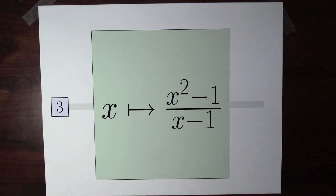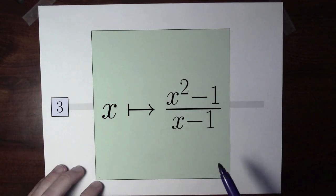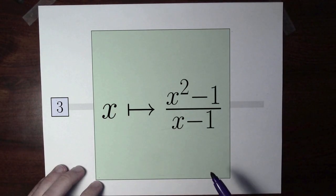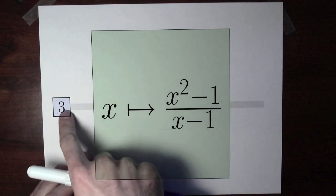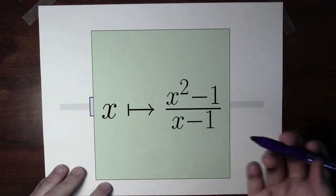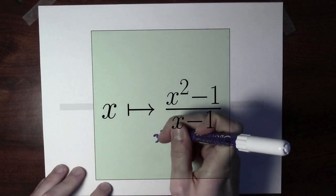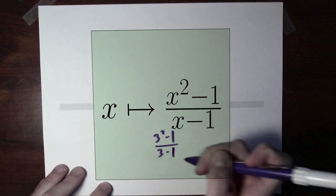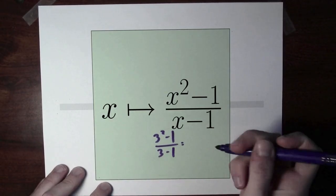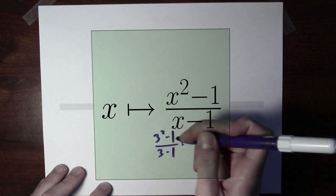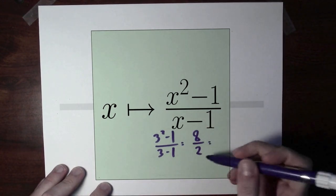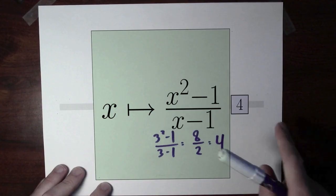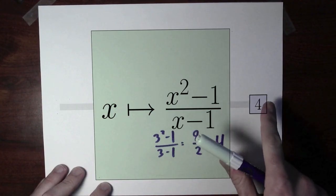Let's take a look at this function. This is the function that takes an input x and spits out x squared minus 1 divided by x minus 1. Let's try plugging the number 3 into this function. If I just compute 3 squared minus 1 over 3 minus 1: 3 squared is 9, minus 1 is 8, and 3 minus 1 is 2. And 8 over 2 is 4. Sure enough, out of this function comes the number 4.